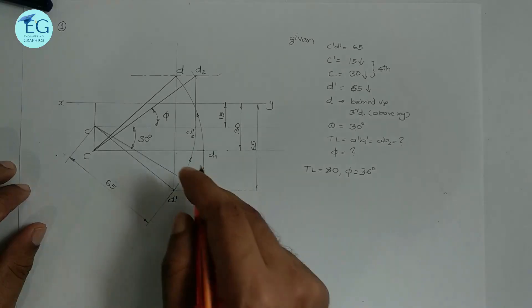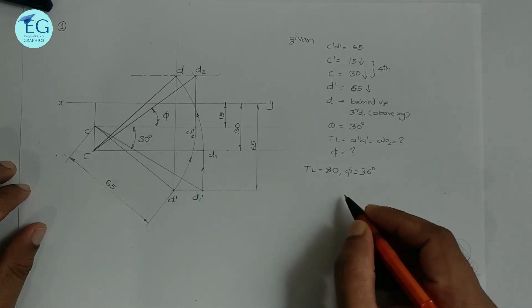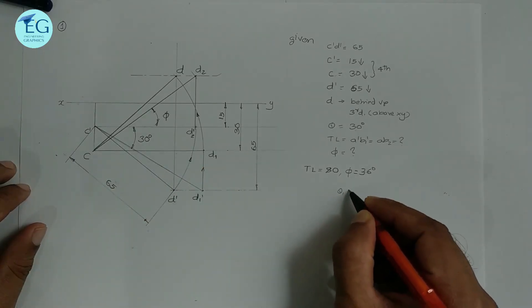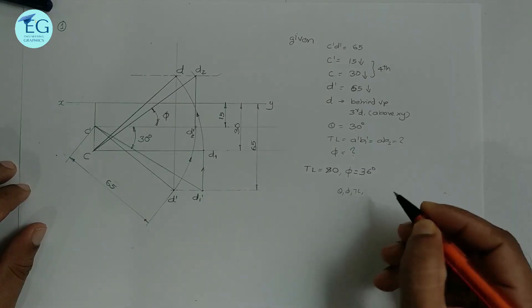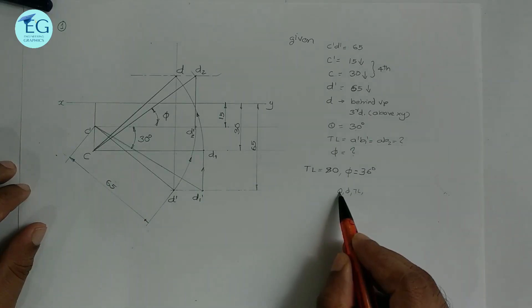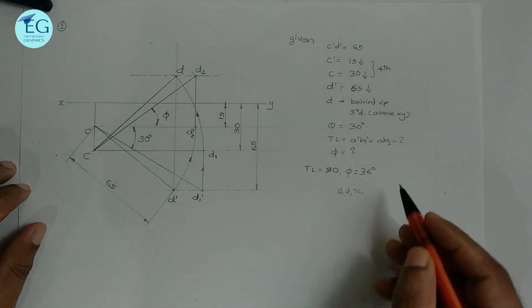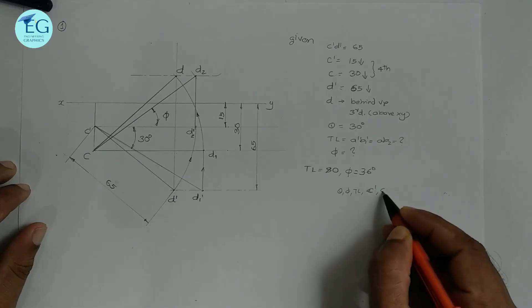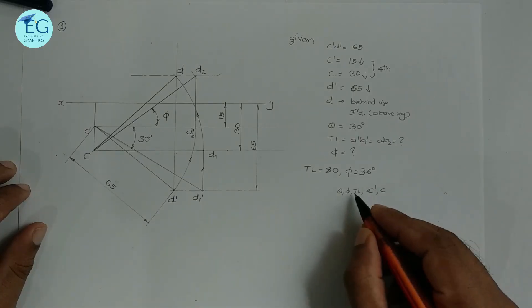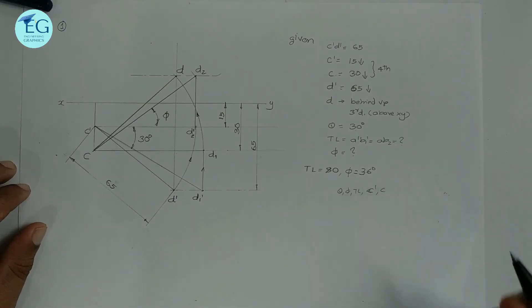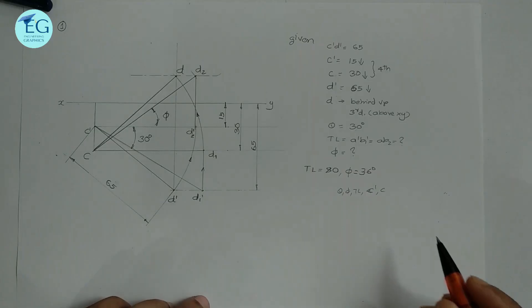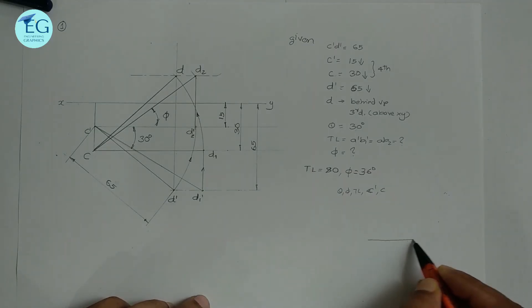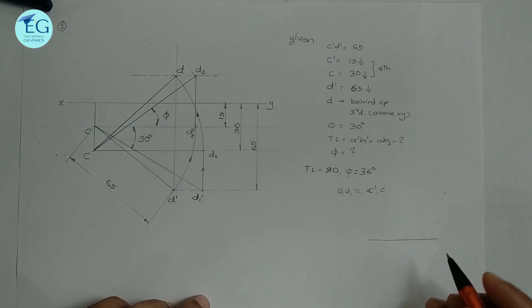This uses the rotating line method. This is the general figure. Theta gives the true length and true inclination with HP; from the top view we get true inclination with VP and the true length. That is C dash to C. This is the data. If you want to apply the line rotation method, we will proceed with the line rotation method.